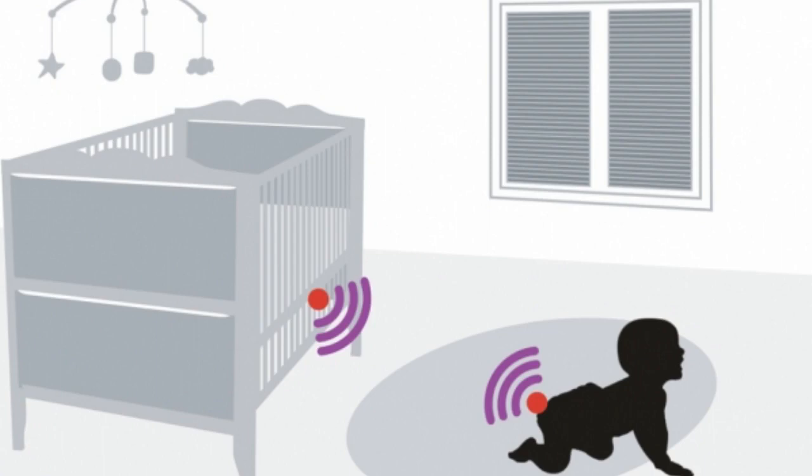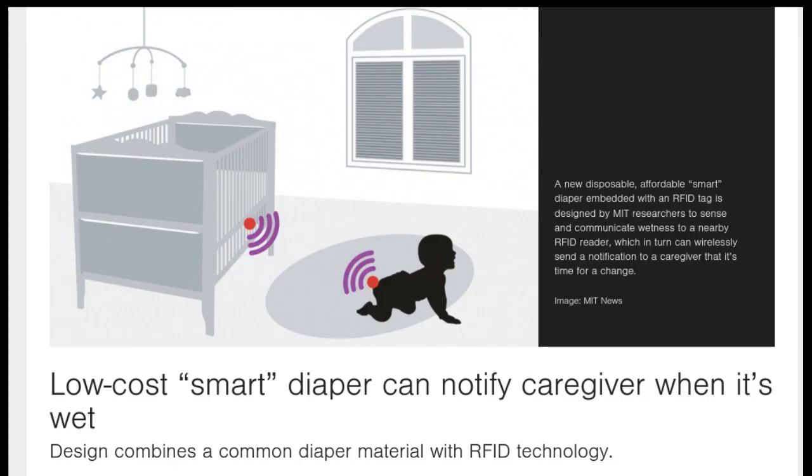RFID tags don't require batteries. They receive energy in the form of radio waves emitted by an RFID reader. When an RFID tag picks up this energy, its antenna activates the RFID chip, which tweaks the radio waves and sends a signal back to the reader, with its information encoded within the waves.